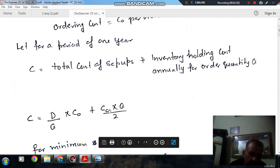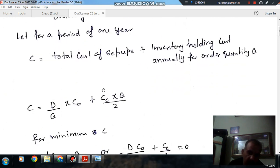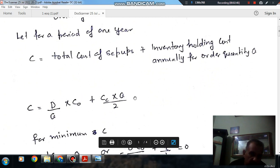This is your ordering cost or setup cost. If Q is the ordering quantity, then Q by 2 is the inventory—Q by 2 is your average inventory that has to be held per year. If it is multiplied by CC, then it will be your inventory holding cost for one year.